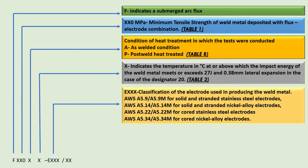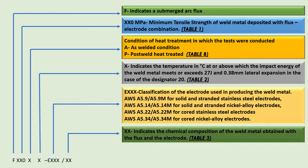After this, we have a designator starting with E, followed by the classification details of the electrode used in producing the weld metal. These designators are from AWS classifications SFA 5.9, SFA 5.14, SFA 5.22, and SFA 5.34. After this, we have a numeric designator which indicates the chemical composition of the weld metal obtained with the combination of flux and electrode, as given in Table 3 of SFA 5.39.